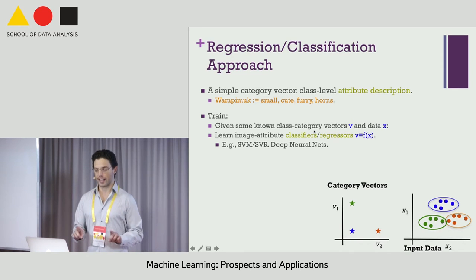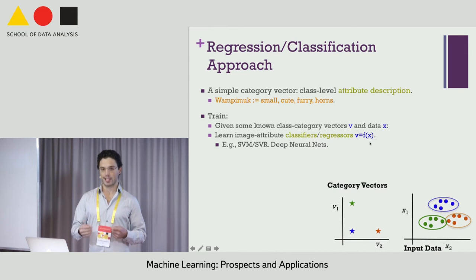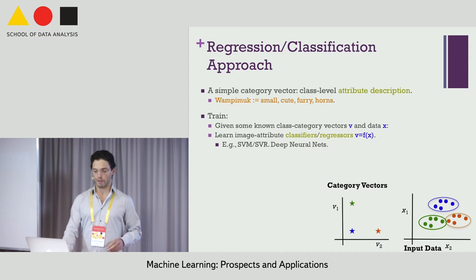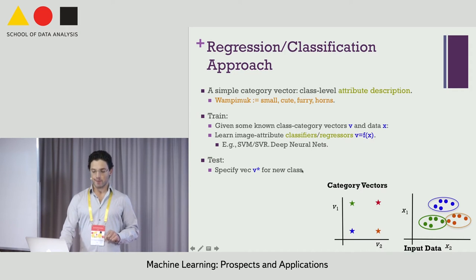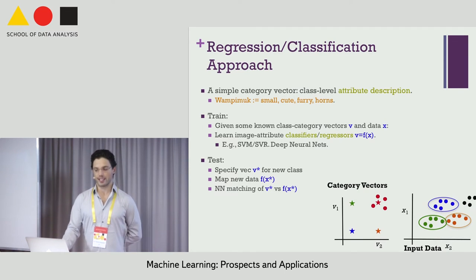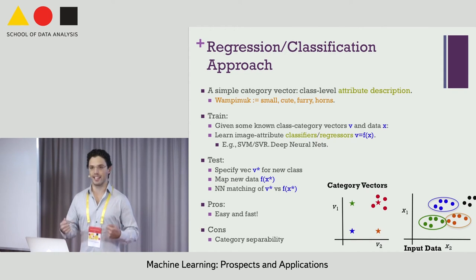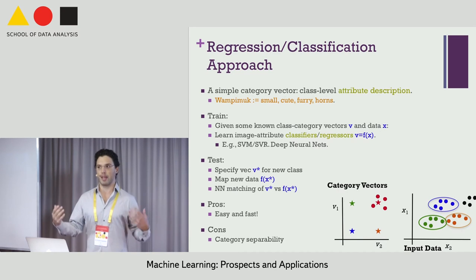The first algorithm uses regression or classification as its underlying mechanism. Given training data with known category vectors and data pairs, you train a regressor from the feature space to those category vectors — it would be a classifier if the category vectors were binary. You can use any supervised learning method: SVM, SVR, deep neural nets, etc. At test time, you get the new category vector, map data through the learned mapping, and do nearest-neighbor matching. It's easy to program in about five minutes in MATLAB or Python.